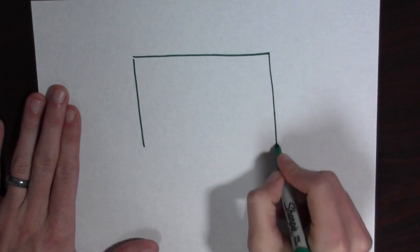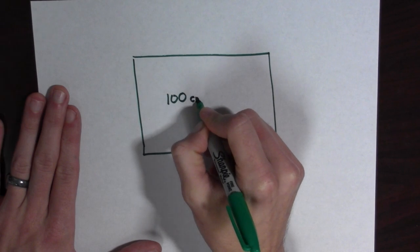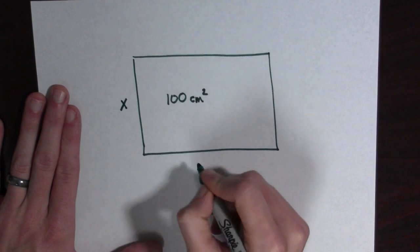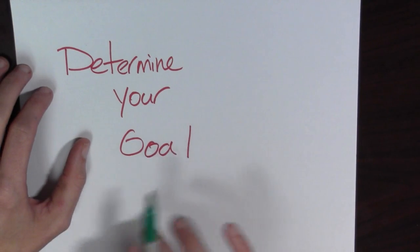Here's my rectangle and the area is a hundred square centimeters and I don't know what the side lengths are going to be so I'll call them x and y.